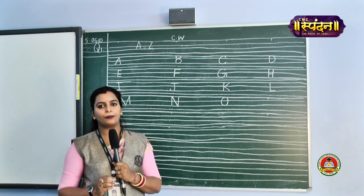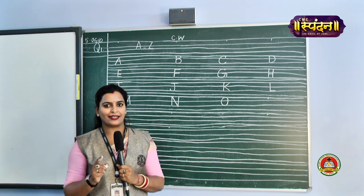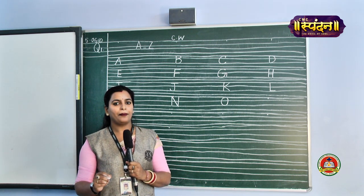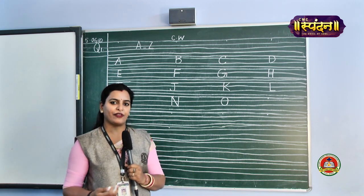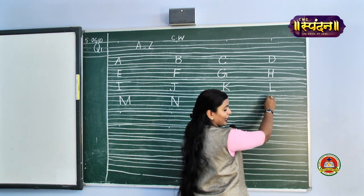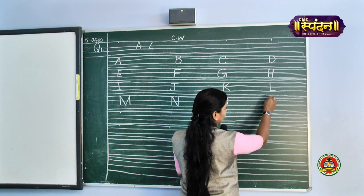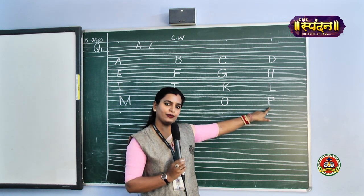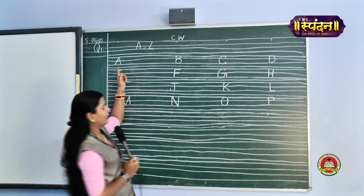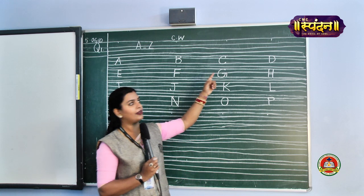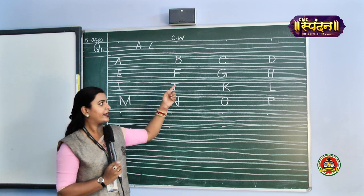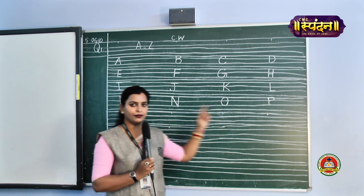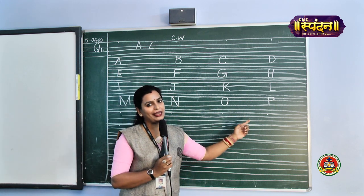Next we have alphabet P. P is for pen, P is for pencil — the pencil which you are holding right now. P is for parrot. Our next alphabet is alphabet P. We will start from the pink line, bring it to the black line, and then make a curve, just below alphabet L. Let us revise from the top: A, B, C, D, E, F, G, H, I, J, K, L, M, N, O, P.